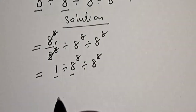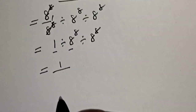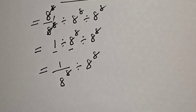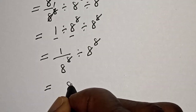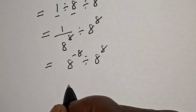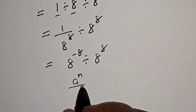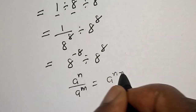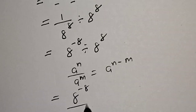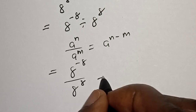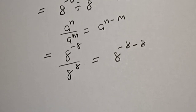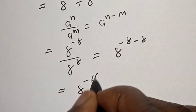Let's continue with this operation. We have 1 over 8 raised to power 8, divided by 8 raised to power 8. This is equal to 8 raised to power negative 8, divided by 8 raised to power 8. Using the rule: a raised to power n over a raised to power m equals a raised to power n minus m, this becomes 8 raised to power negative 8 minus 8, which equals 8 raised to power negative 16.